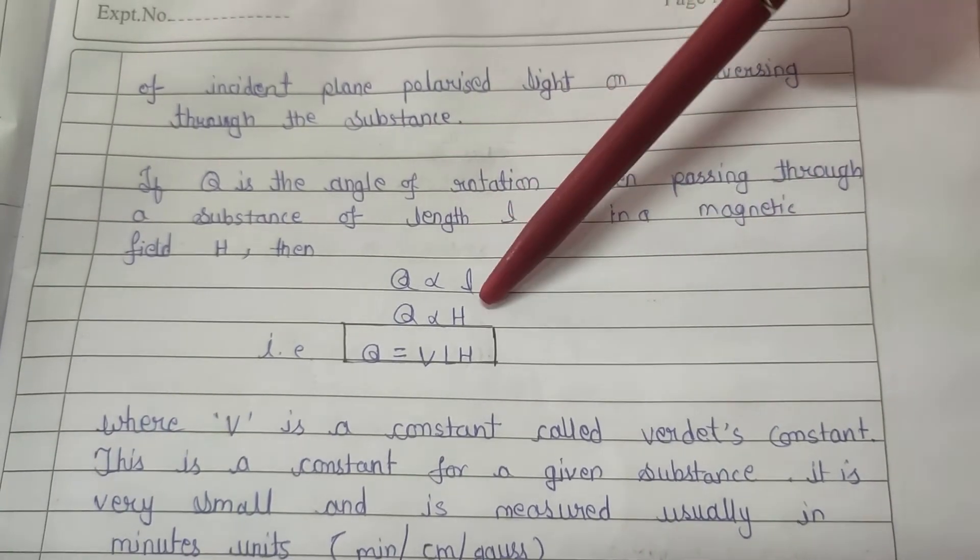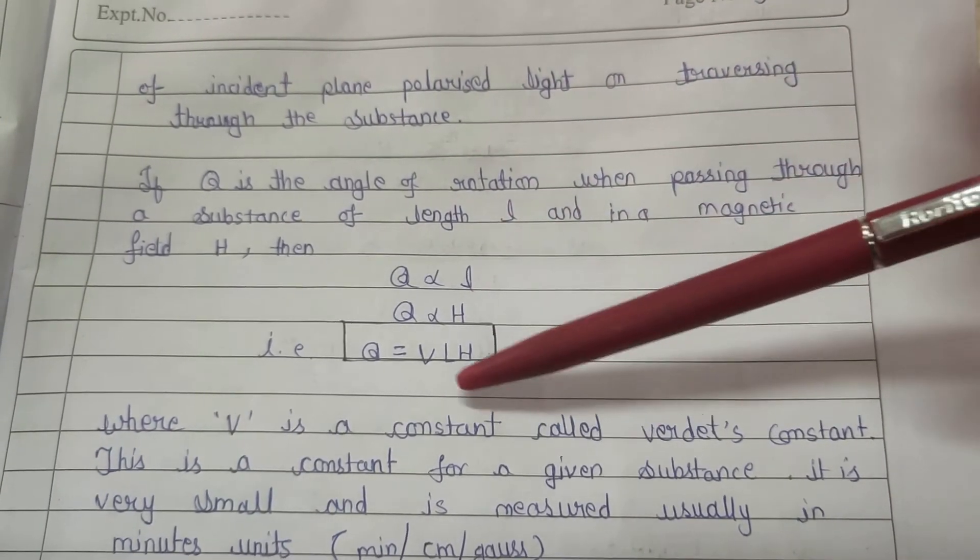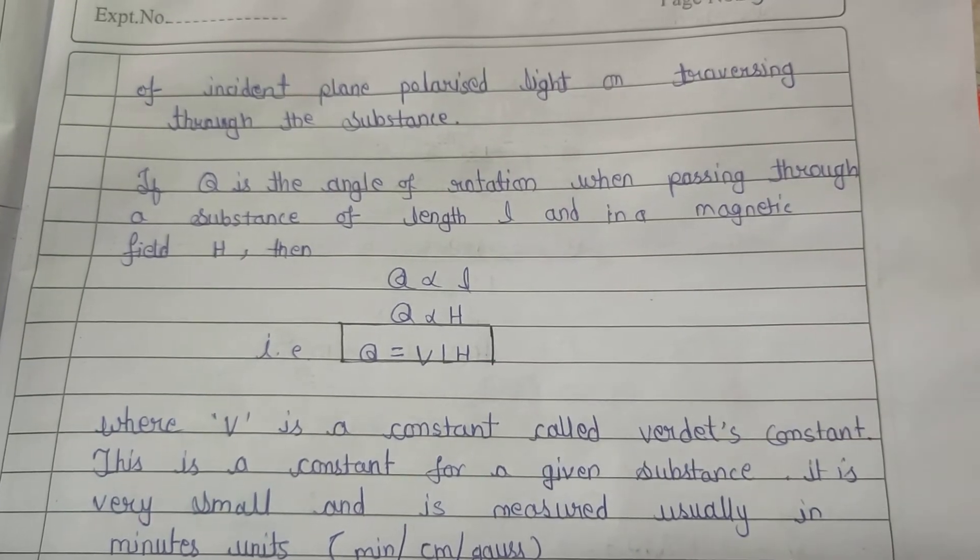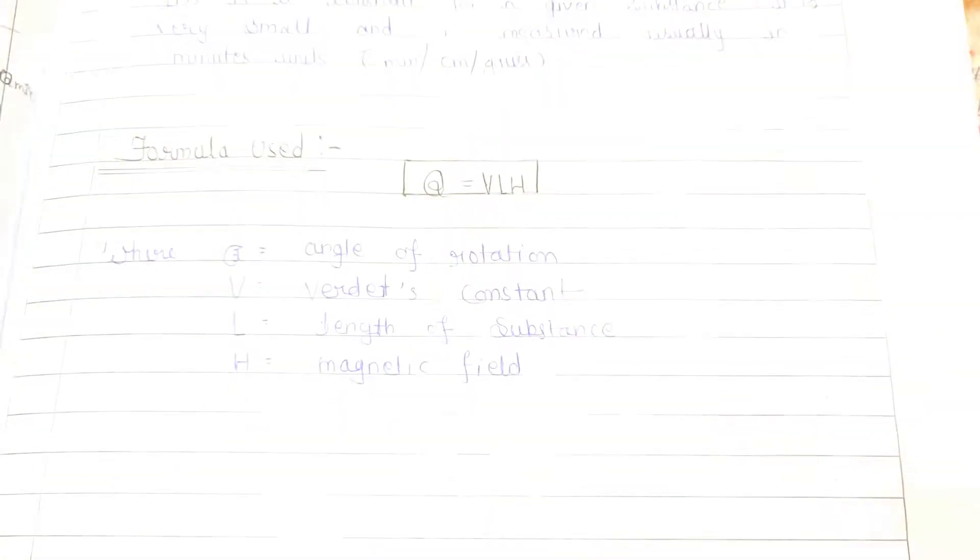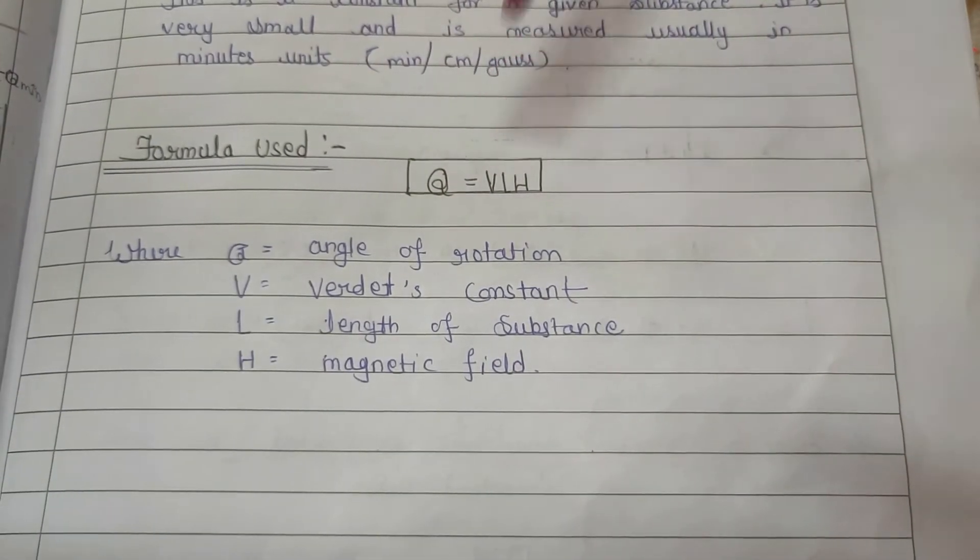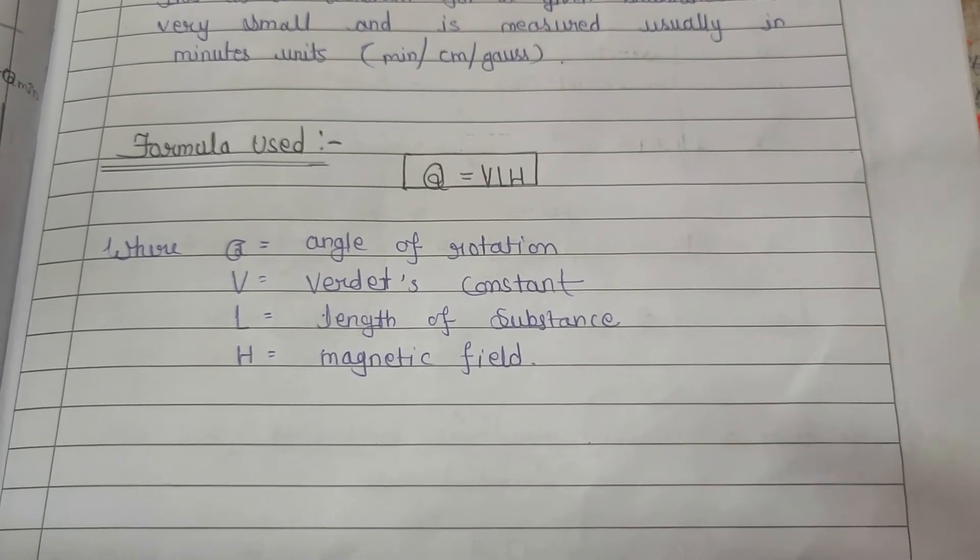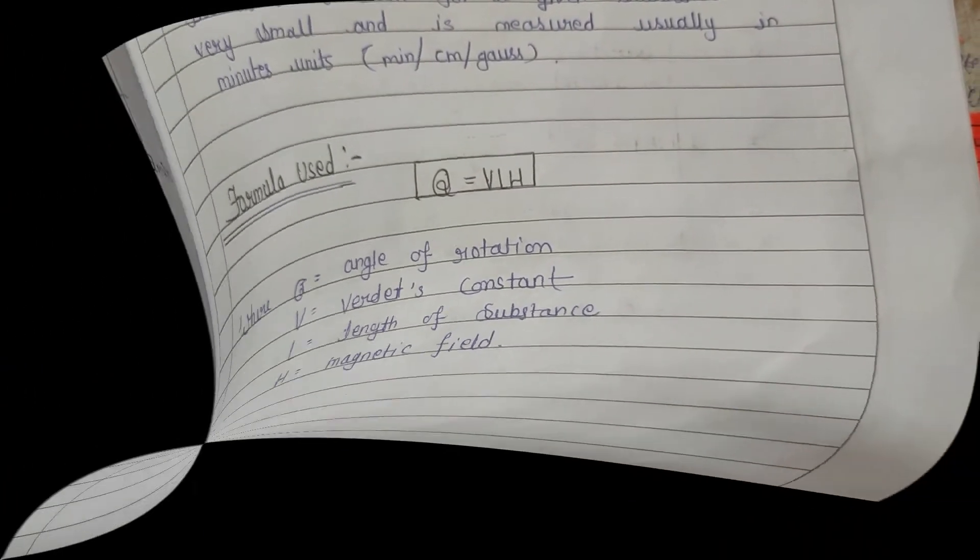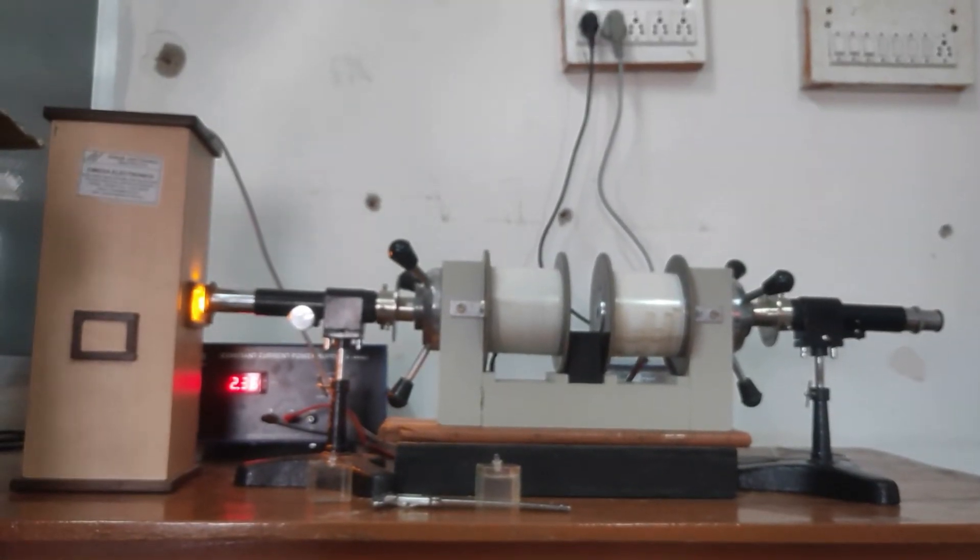Now when we remove the proportionality symbol, the proportionality constant comes, which we call Verdet's constant. We denote the Verdet's constant as V, and we find out the practical value of this constant.